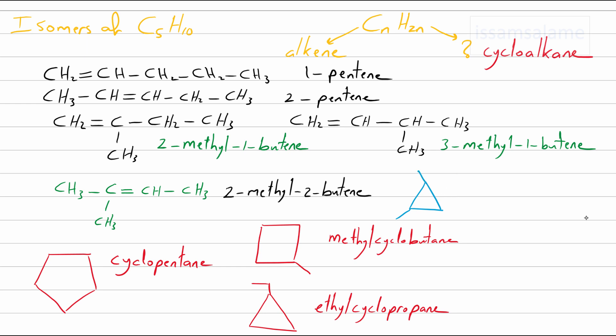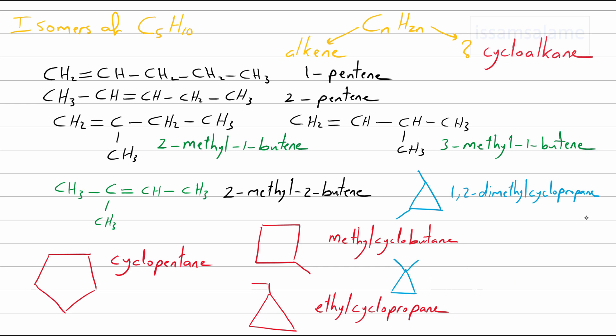What if we have two methyl substituents joined to two different carbons of cyclopropane? We should mention the location of these methyls, so the name is 1,2-dimethylcyclopropane. The last isomer is when we have two methyls joined to the same carbon in the cyclopropane, and its name is 1,1-dimethylcyclopropane.